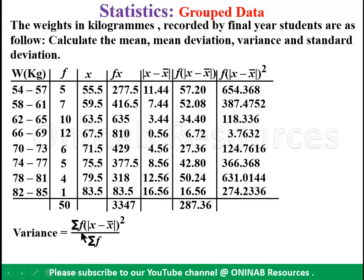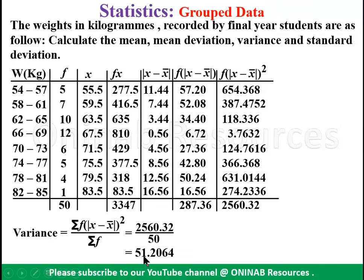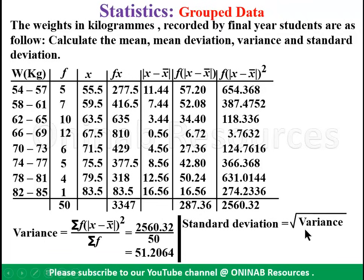Summing the f times (x minus x-bar) squared column gives 2560.32. Substituting into the variance formula, we get 2560.32 over 50, which equals 51.2064. This is the variance of the distribution. The standard deviation is the square root of the variance, so we find the square root of 51.2064.